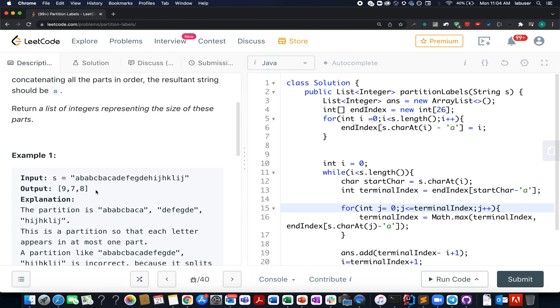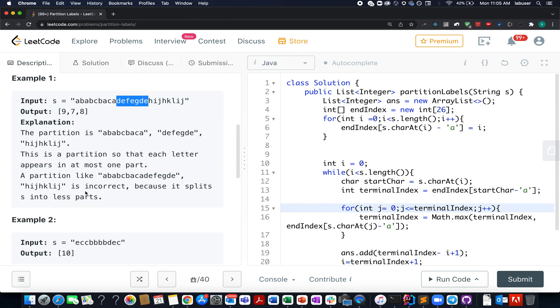Here the input string is pretty long: a b c a b a b c b a c a d e f e g h d e h i j k h k l i j. It will be divided into three parts. The first part width would be equal to nine, the second part width would be equal to seven, and the last part width would be equal to eight.